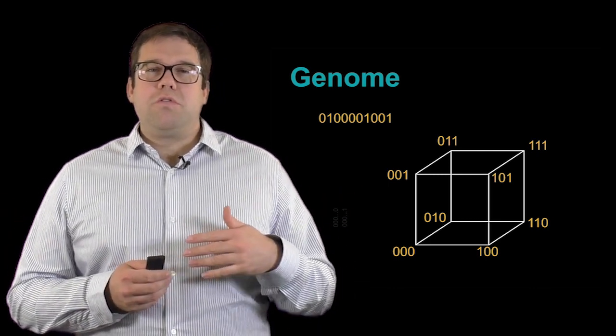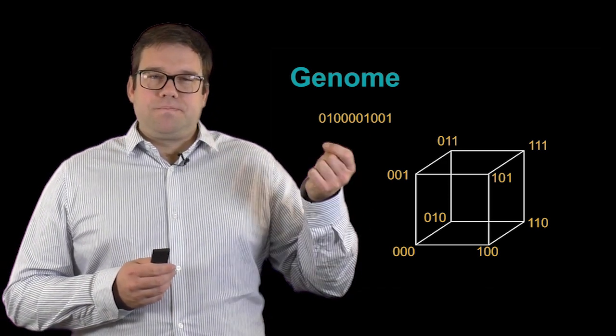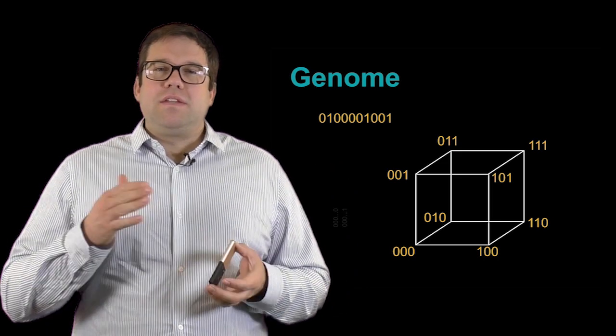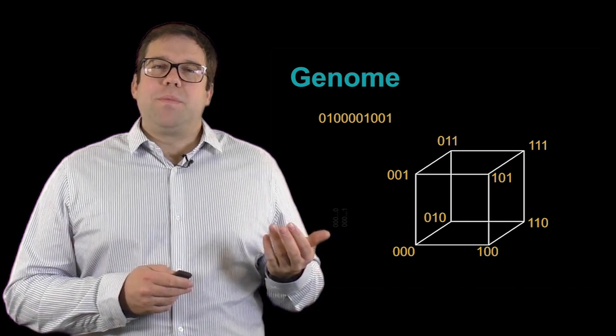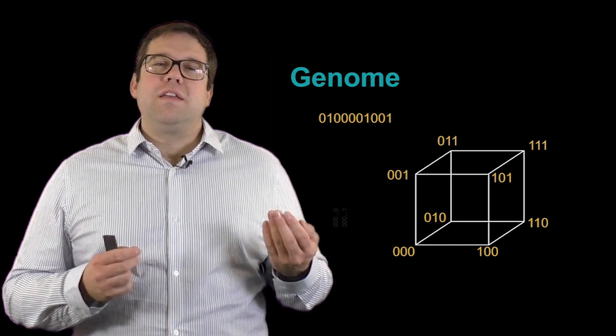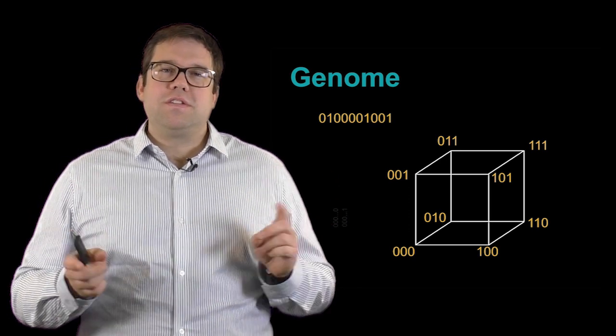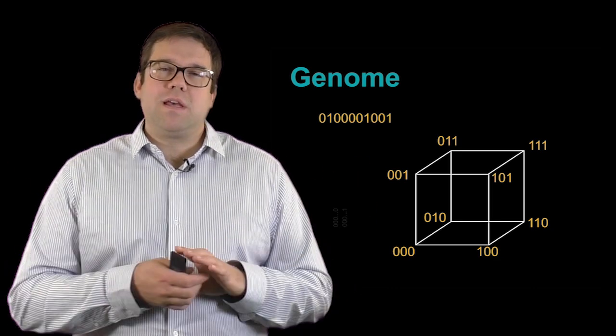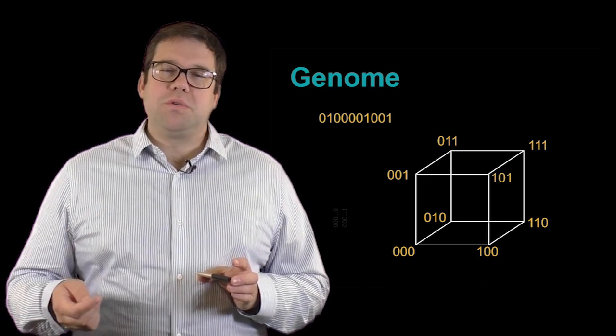You can go from say 000 to 001 by moving, by just changing the last position. And now you can see how many steps each of these different genomes are from each other in this complicated space. What you would have in a genome of arbitrary length L is that you would have, for each of these nodes, L branches coming out of that node in this hyperspace that would represent the way in which you would transition or mutate from one genome to another.